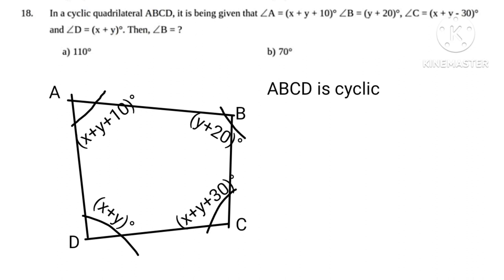Since ABCD is cyclic, therefore A plus C equals 180 degrees, B plus D equals 180 degrees. Now putting values for A, B, C, and D.